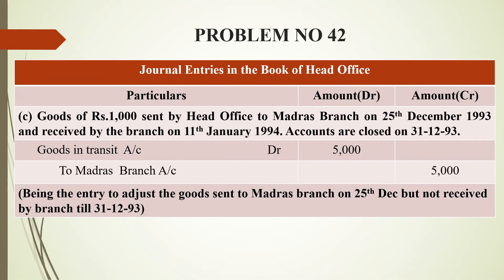The third adjustment is: goods of rupees 1000 sent by head office to Madras branch on 25th December 1993, but received by the branch on 11th January 1994. The accounts are closed on 31st December 1993.